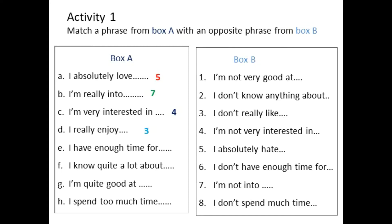E: 'I have enough time for' doing something — the opposite is number 6: 'I don't have enough time for' doing something. G: 'I'm quite good at' — for example, I'm good at maths, I'm good at playing football, I'm good at playing video games. The opposite is 'I'm not very good at.'